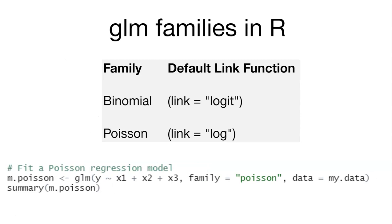There are lots of different families we might use in R. Logistic regression uses the binomial family, where the link between the mean and the variance is a logit. You'll often hear logistic regression referred to as logit regression — they're the same thing. The term logit refers to the link function that connects the mean and the variance together.